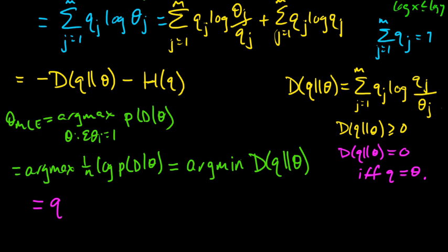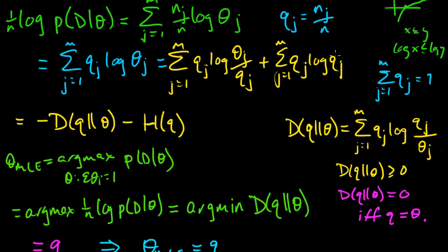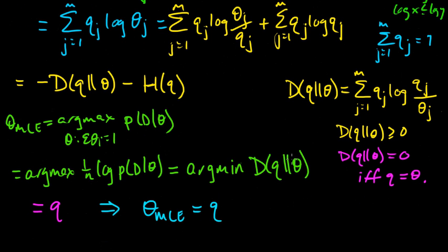And what is... so that means we have our result. So that means theta_MLE, that thing, is q. And q is, well just let's just write up what it is. q is this thing, it's the n_j's divided by n, so this is n_1 over n, n_2 over n, etc., up to n_m over n.